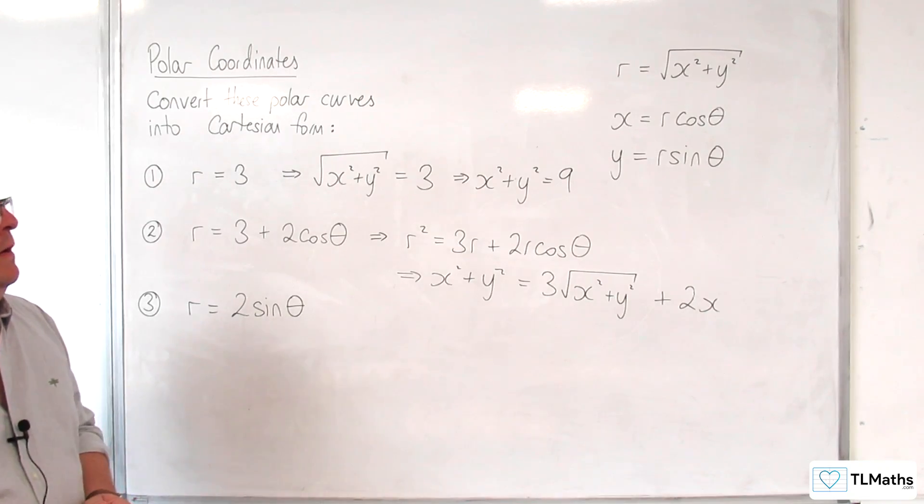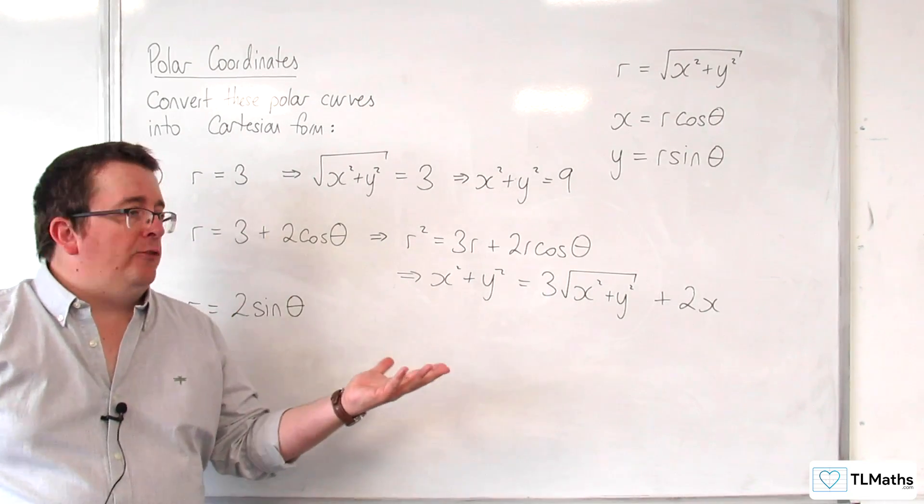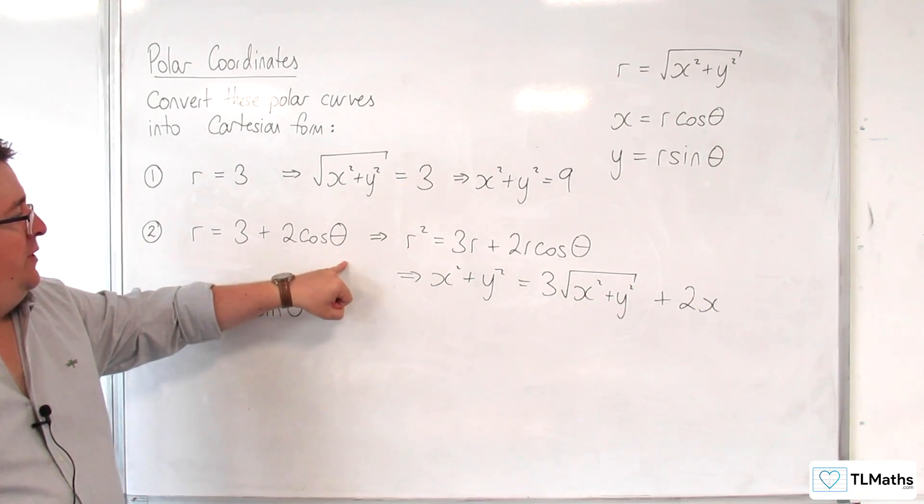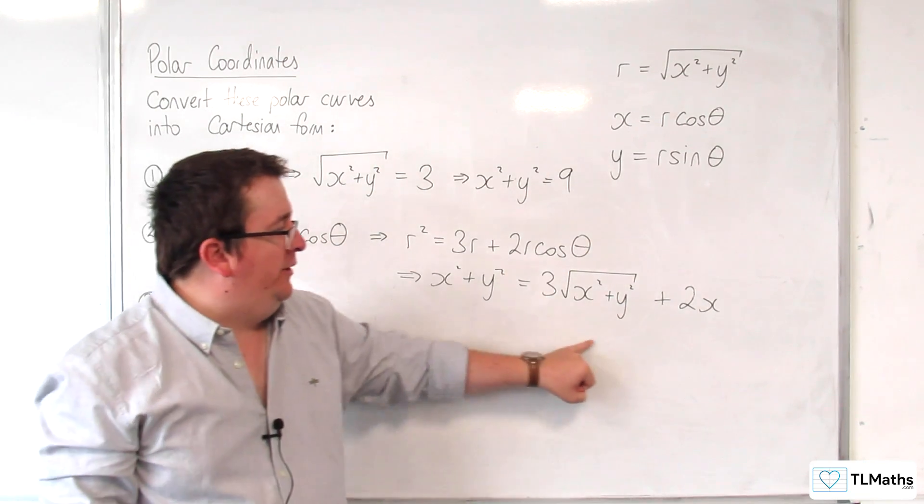So I would suggest looking at Desmos or Geogebra, trying this out, R equals 3 plus 2 cosine theta, and see if that matches what we have here.